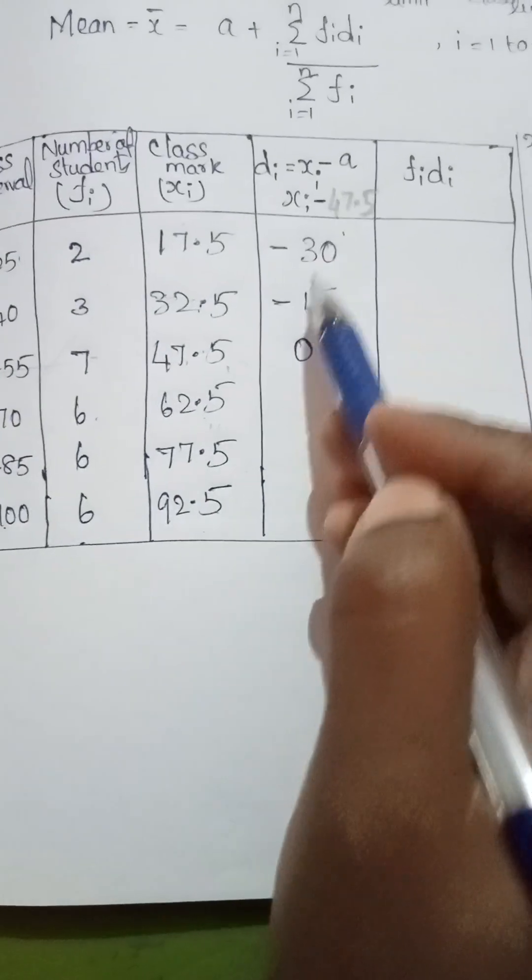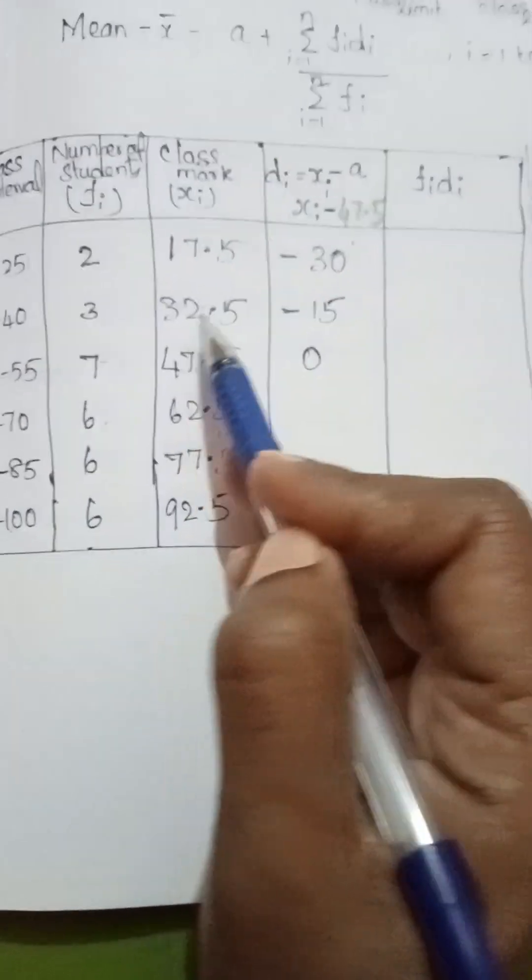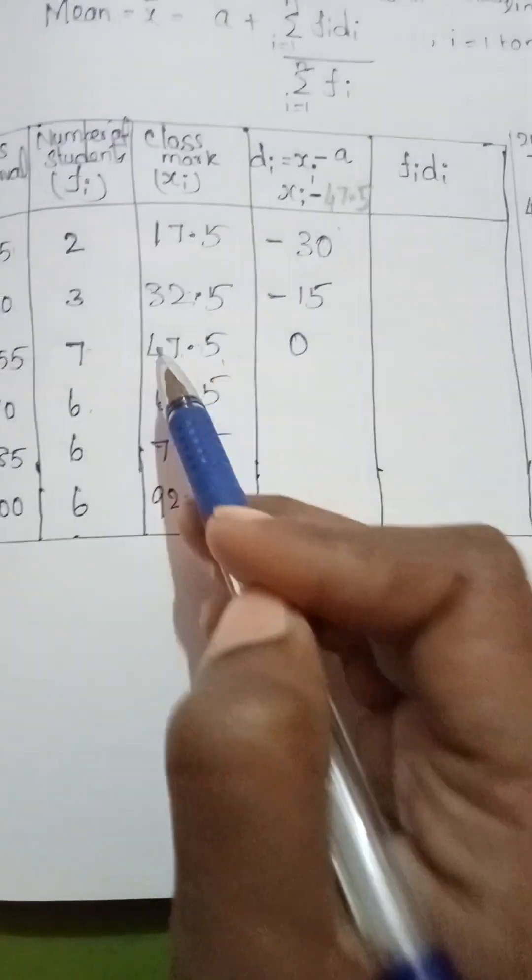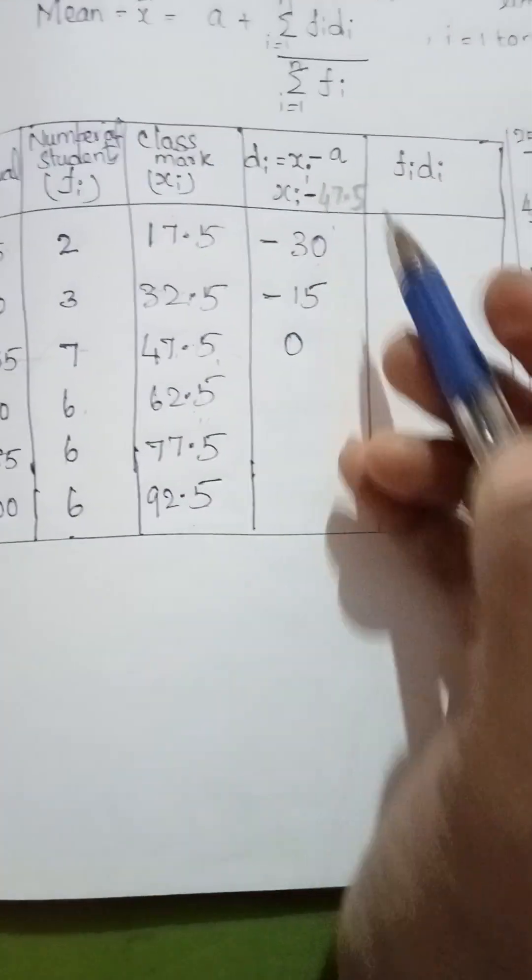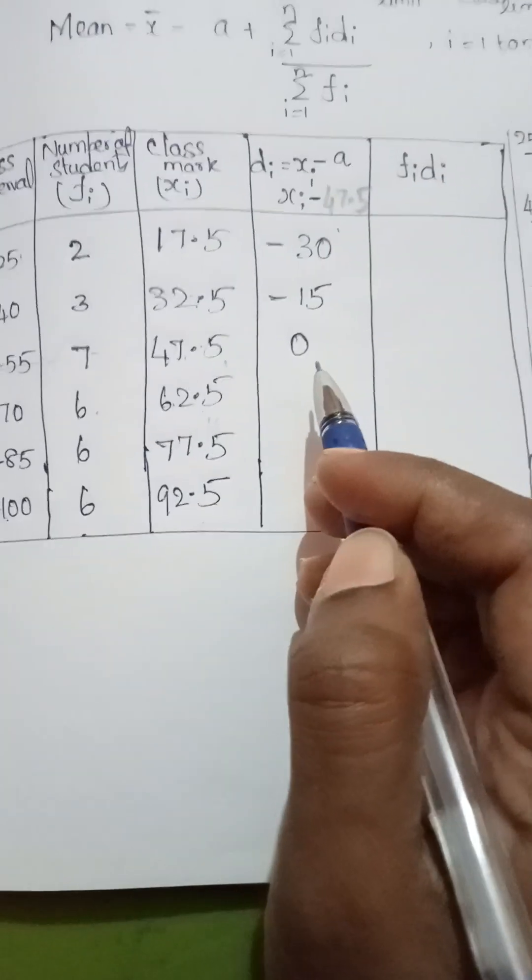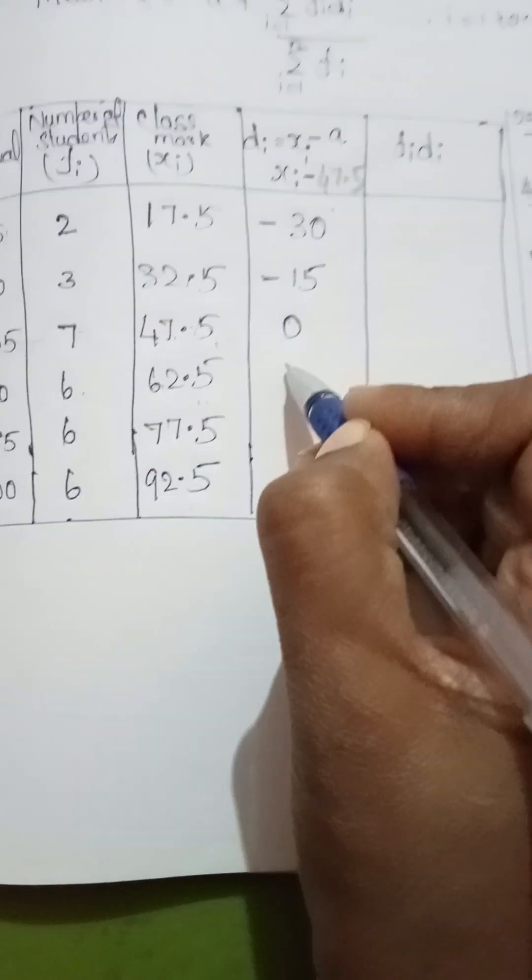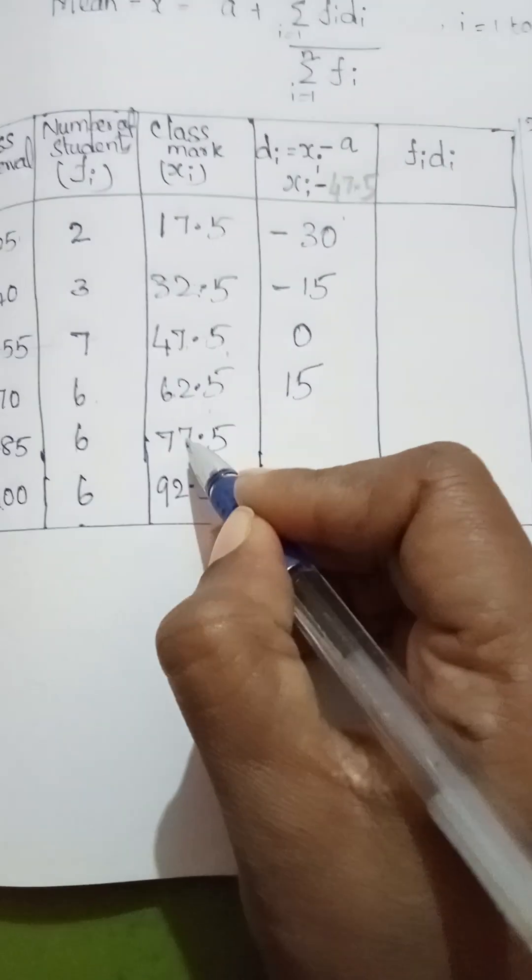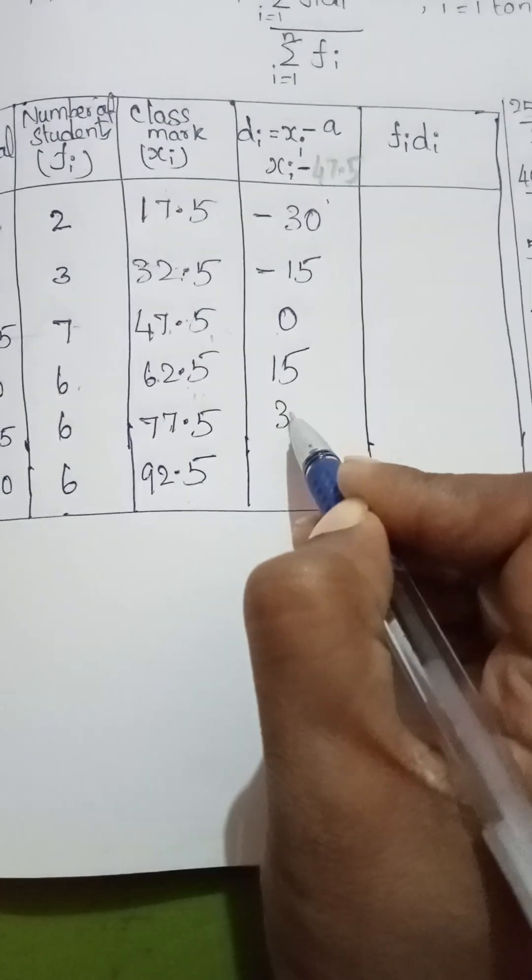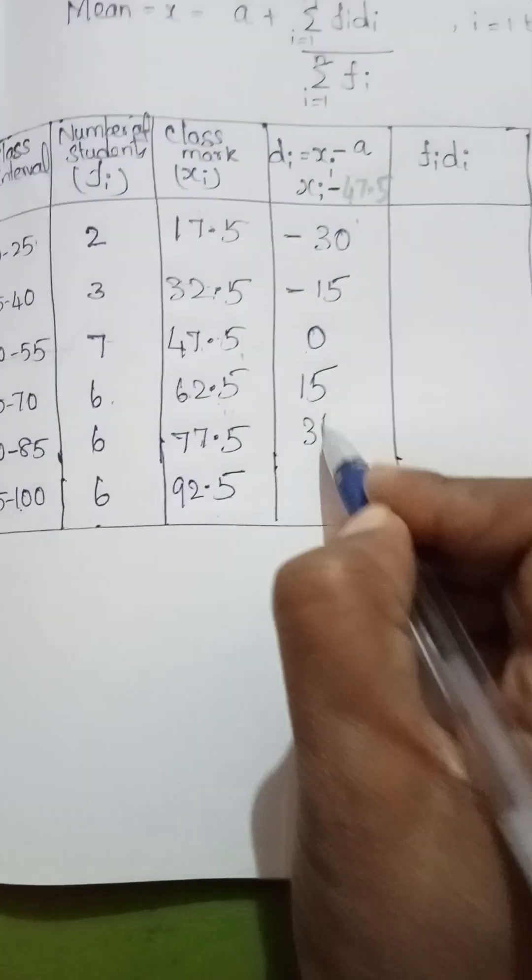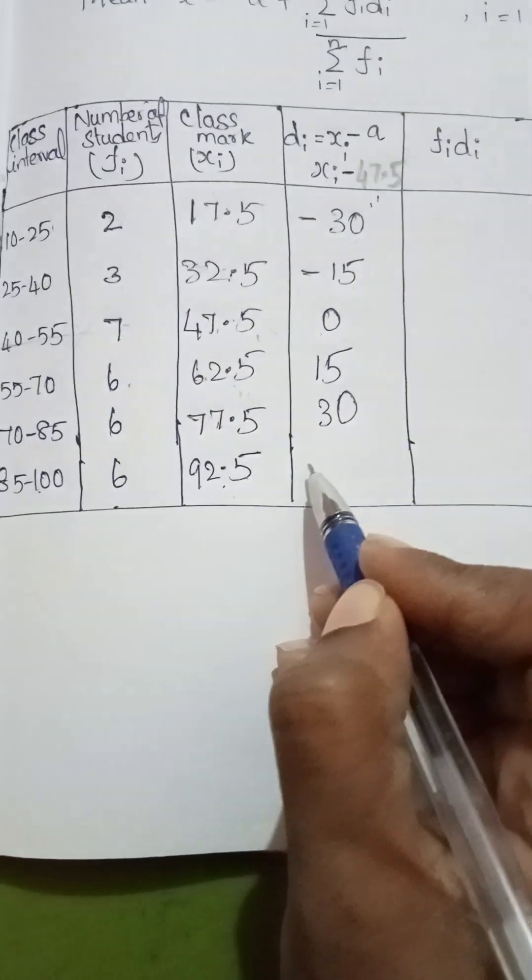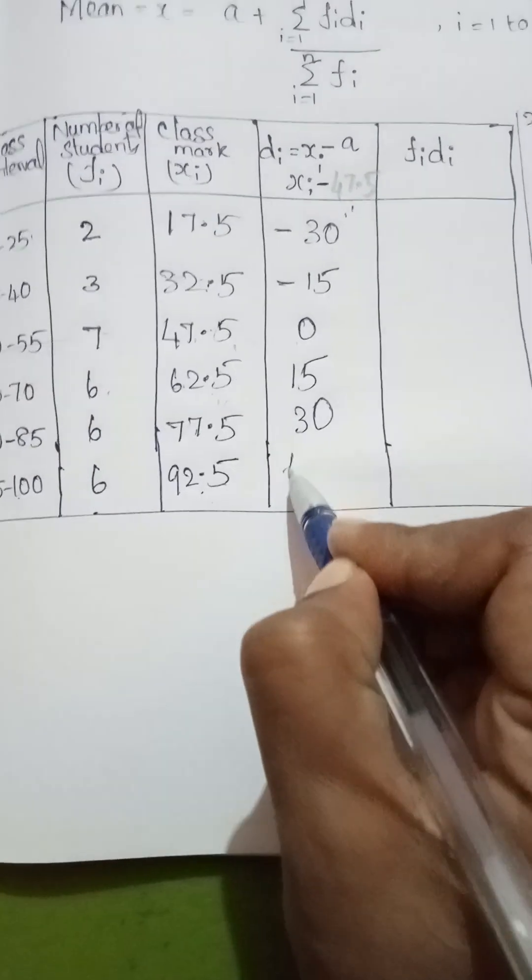So 17.5 minus 47.5 equals minus 30. 32.5 minus 47.5 is minus 15. 47.5 minus 47.5 is 0. 62.5 minus 47.5 is plus 15. 77.5 minus 47.5 is plus 30. 92.5 minus 47.5 is 45.